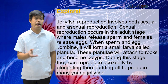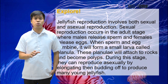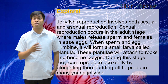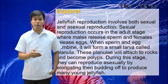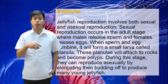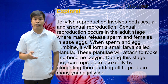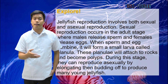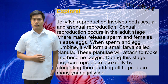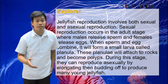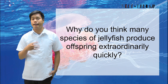Let us explore. Jellyfish reproduction involves both sexual and asexual reproduction. Sexual reproduction occurs in the adult stage where males release sperm and females release eggs. When sperm and egg combine, they form a small larva called a planula. This planula attaches to a surface and becomes a polyp. During this stage, they can reproduce asexually by elongating and budding off to produce many young jellyfish. The question is: why do you think many species of jellyfish produce offspring extraordinarily quickly?